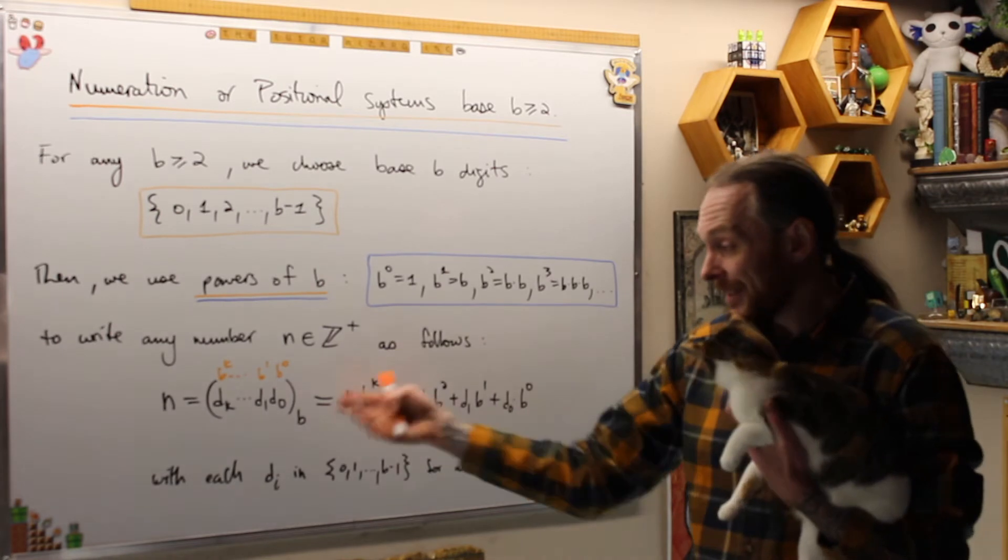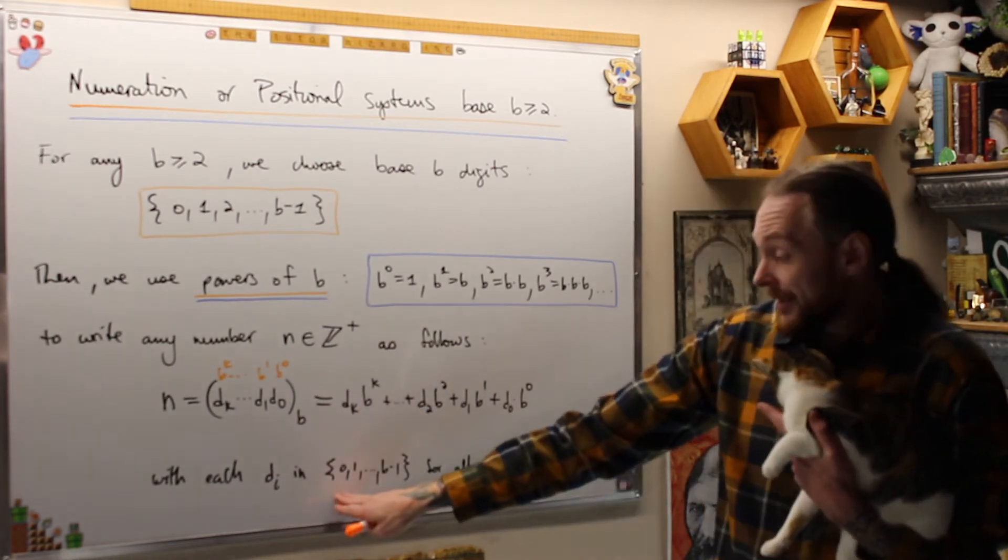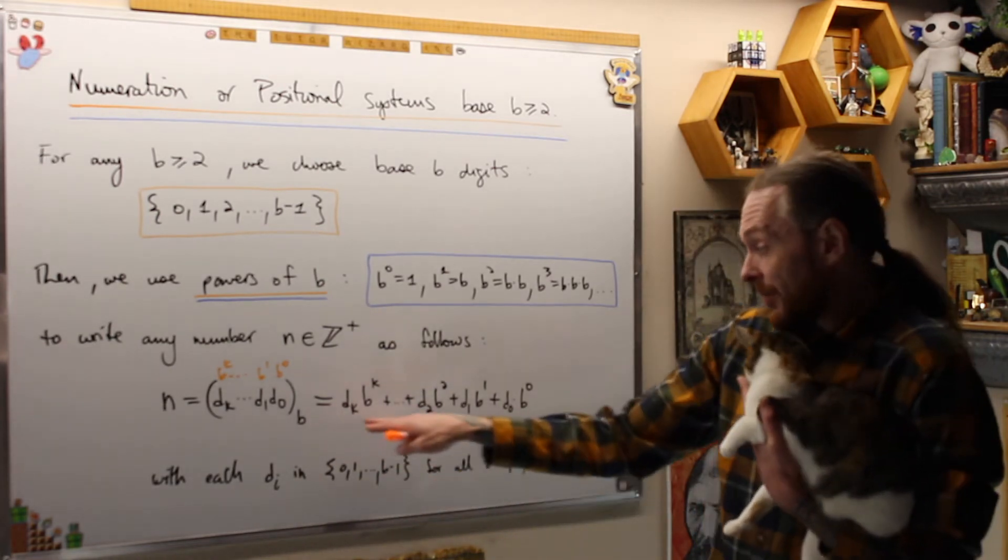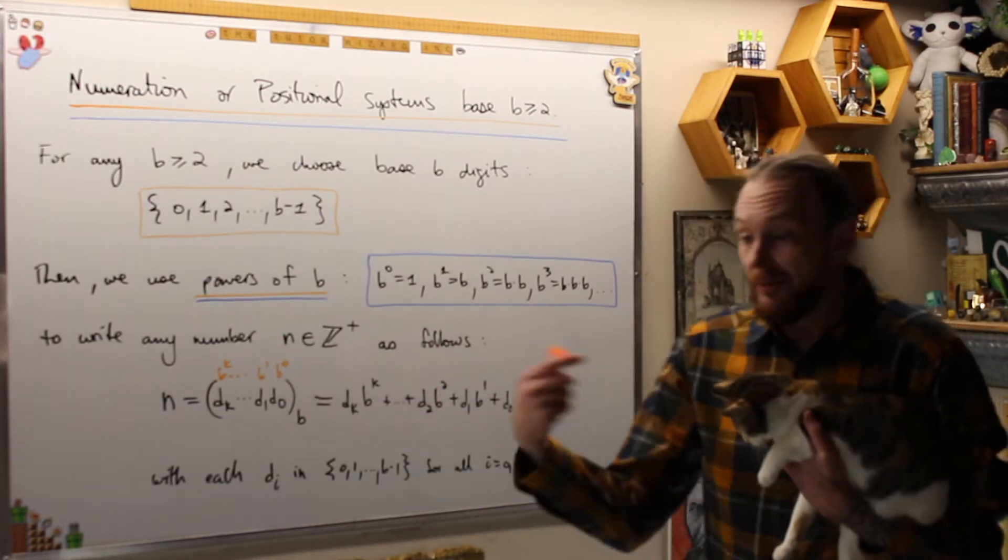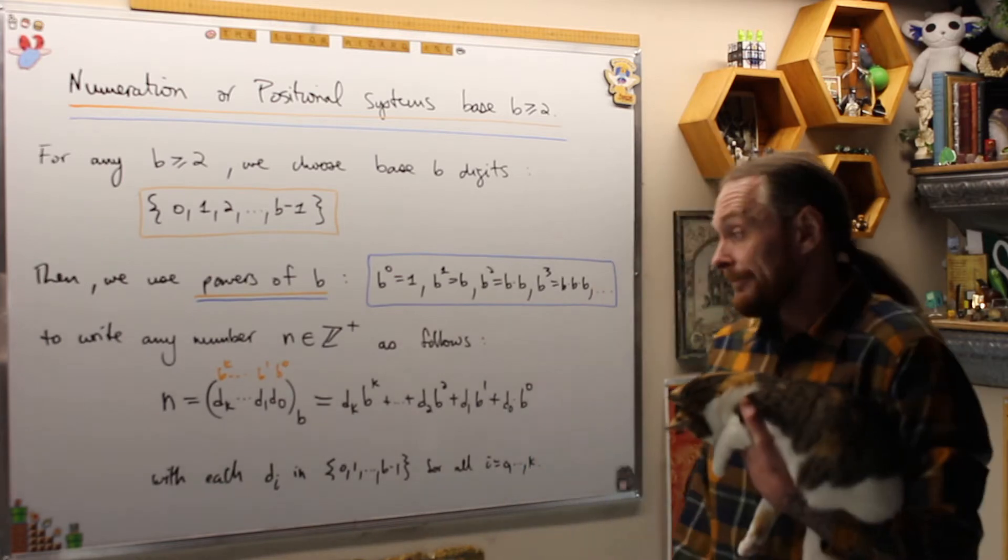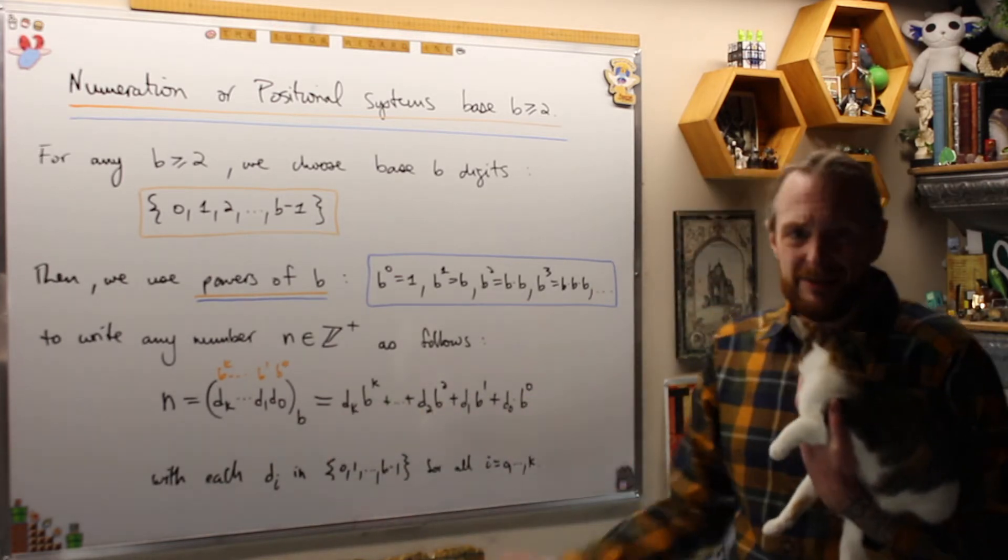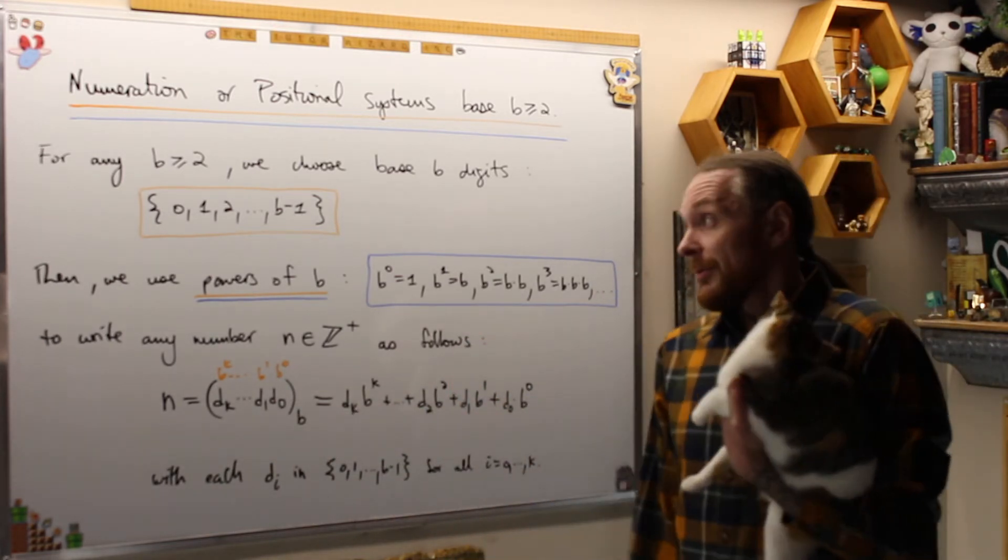Then once we multiply all those digits, which are in the set 0 to B minus 1, we multiply those digits by the powers of B, then we add that up to get essentially what I'm going to keep referring to as how many apples are in the basket. This notation is horrible, I understand. So let's do an example of this right away.